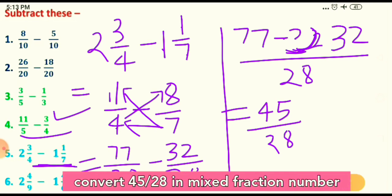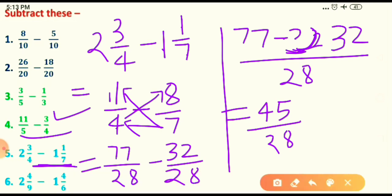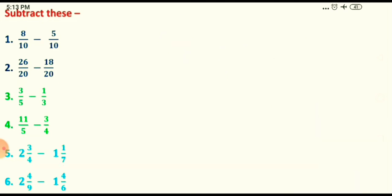Step 3: check if 45 and 28 share a common factor for simplest form — they do not simplify further, so 45 upon 28 is your difference.